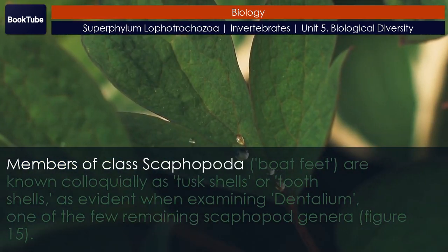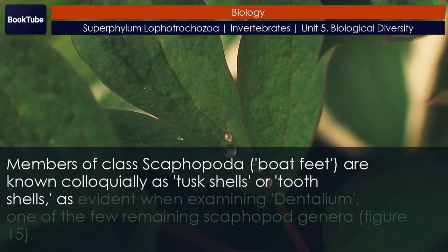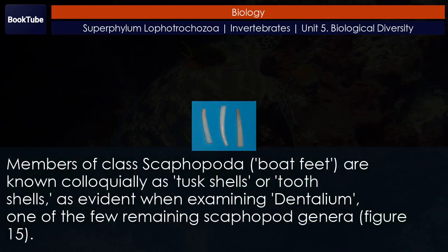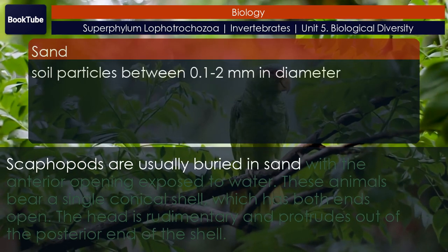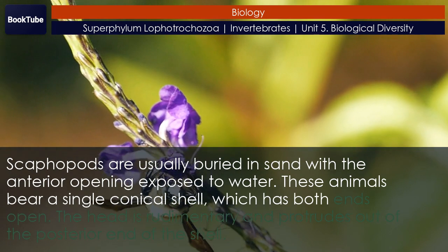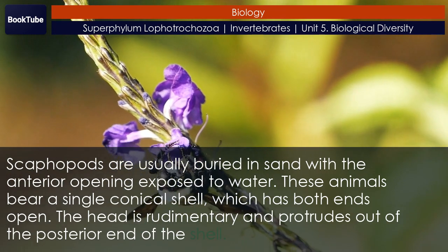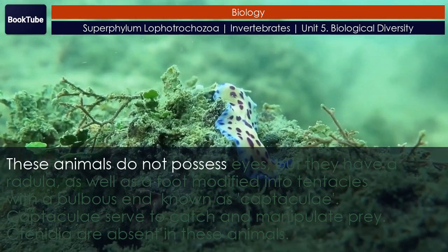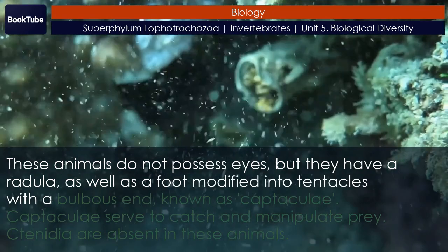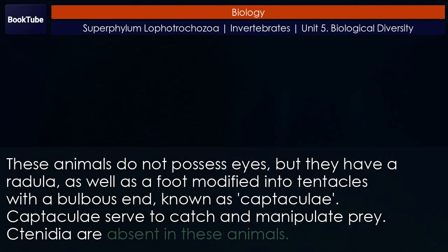Members of class Scaphopoda, meaning boat feet, are known colloquially as tusk shells or tooth shells, as evident when examining Dentalium, one of the few remaining scaphopod genera. Scaphopods are usually buried in sand with the anterior opening exposed to water. These animals bear a single conical shell which has both ends open. The head is rudimentary and protrudes out of the posterior end of the shell. These animals do not possess eyes, but they have a radula as well as a foot modified into tentacles with a bulbous end known as captaculae, which serve to catch and manipulate prey. Ctenidia are absent in these animals.